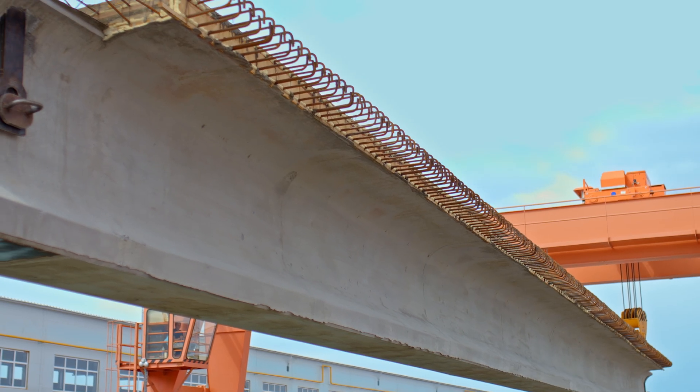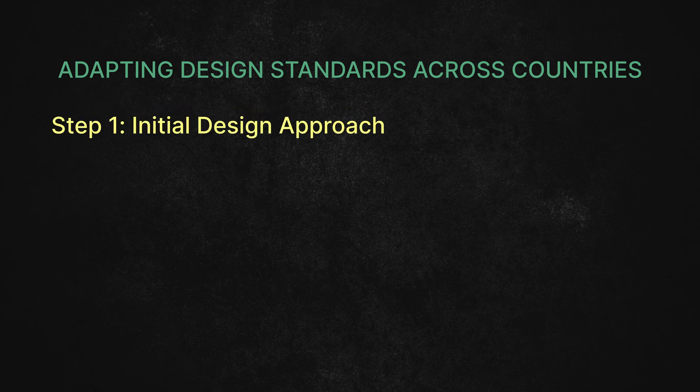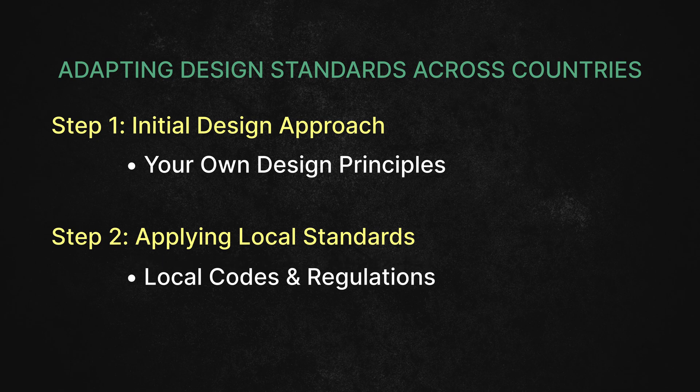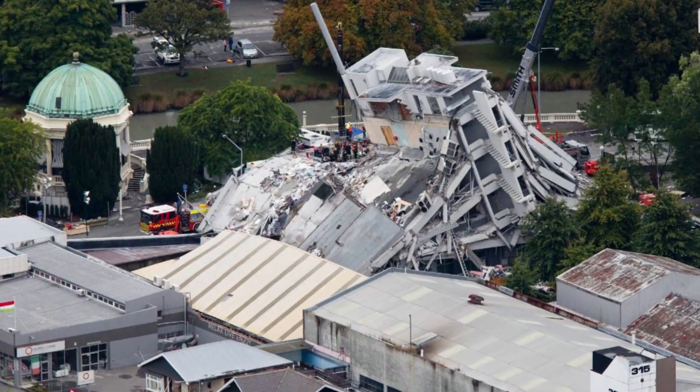It doesn't matter what standard you're designing to — you'll find that you will get to a very similar answer fairly quickly. Nothing is drastically different. Sometimes you may need a little bit more detailing, especially around hinges as opposed to Australian standards, but it doesn't change the beam size or reinforcement. If you are switching countries and looking at different standards, you can use your own design approach to make sure you're getting to the right answer, then use the local code to arrive at the correct result. These standards have been built up based on historical knowledge and local problems. Some things may have very strict requirements because they've had problems in the past, and so they've had to regulate them in more detail.